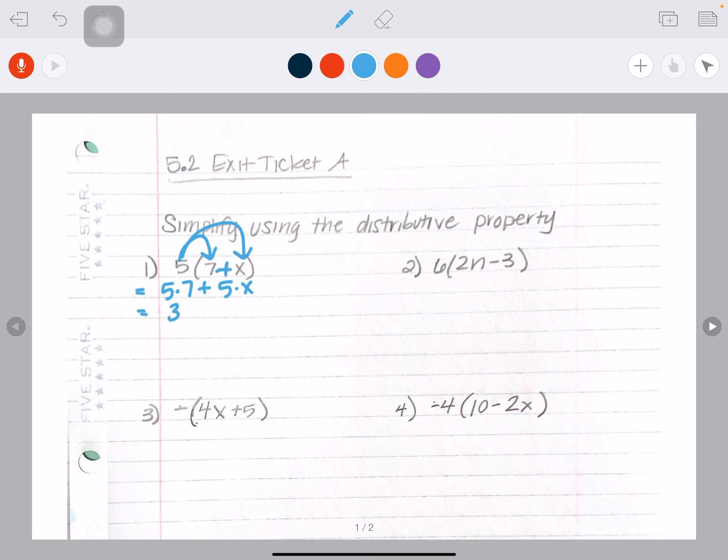Five times seven is 35. And then I have five times X, which is 5X. And then I just want to remember standard form. Standard form says put your variables first, put your constants at the end. So this is my final answer.